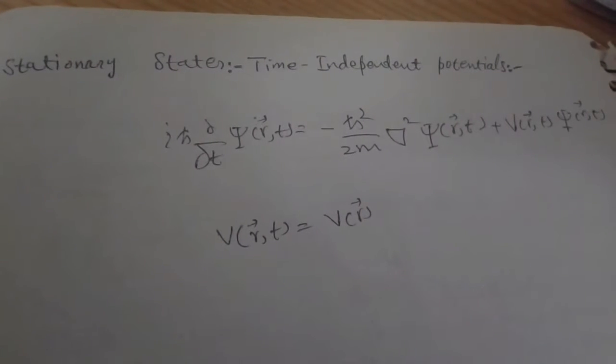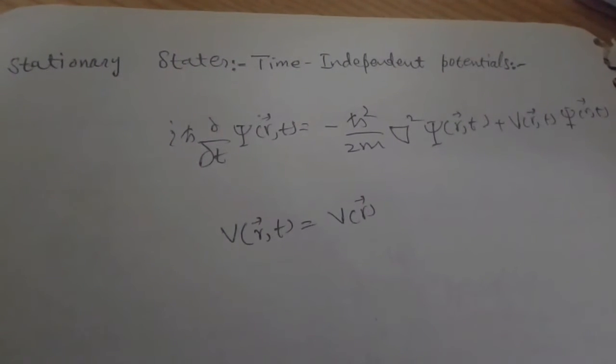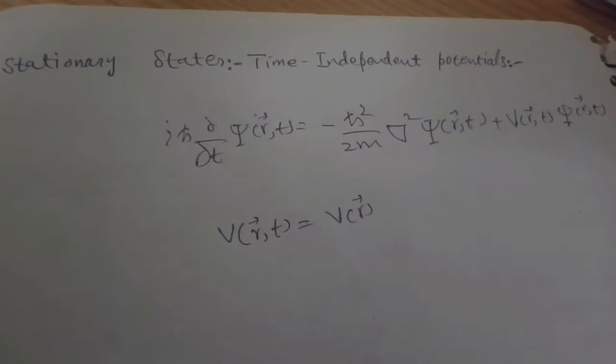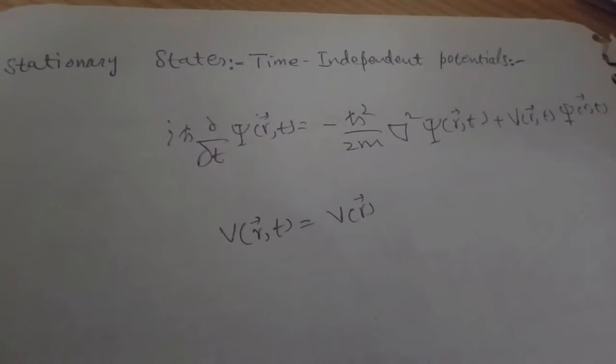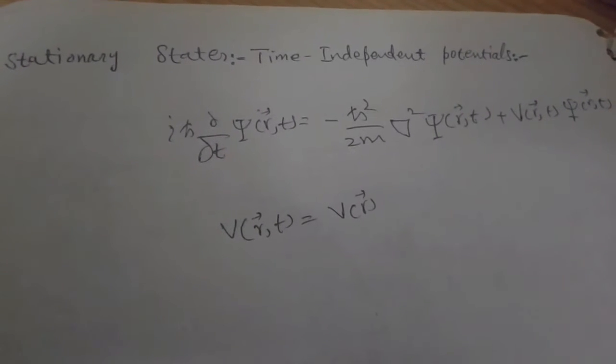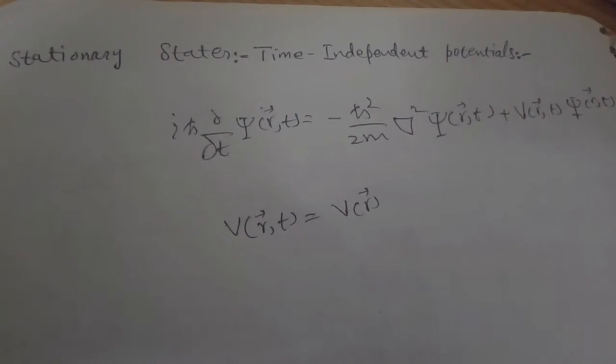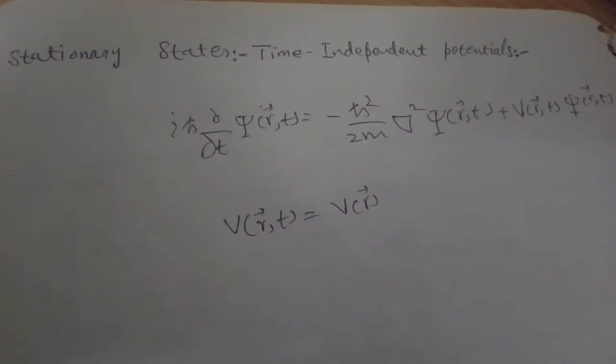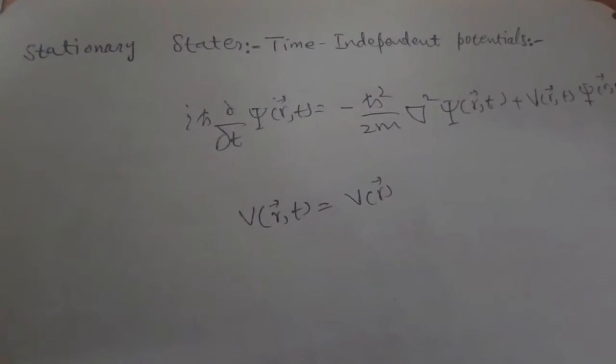Today we will start Zitli chapter number 3, article number 3.6.2. The article name is stationary states or the time-independent potentials.